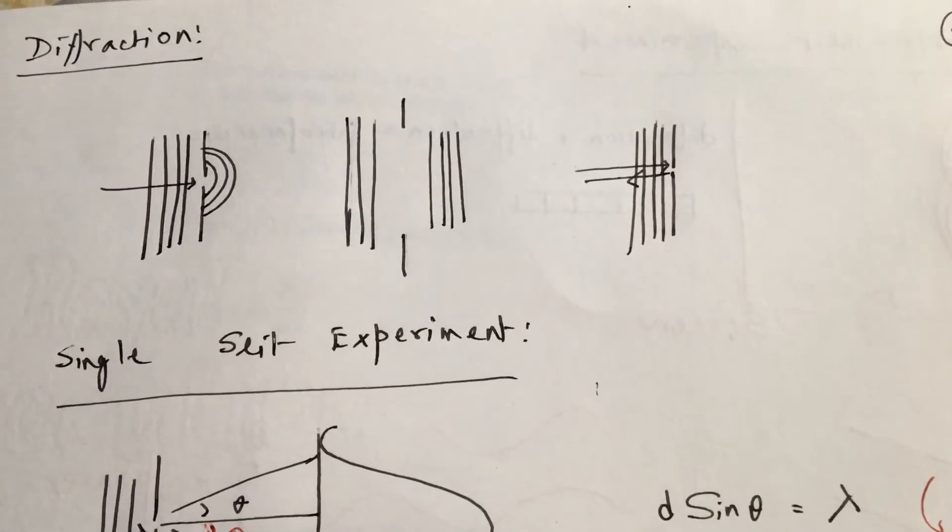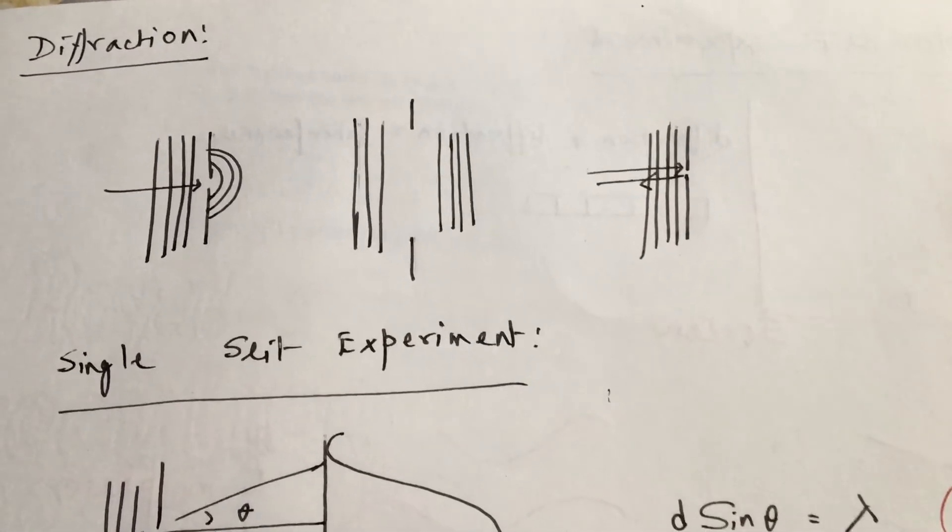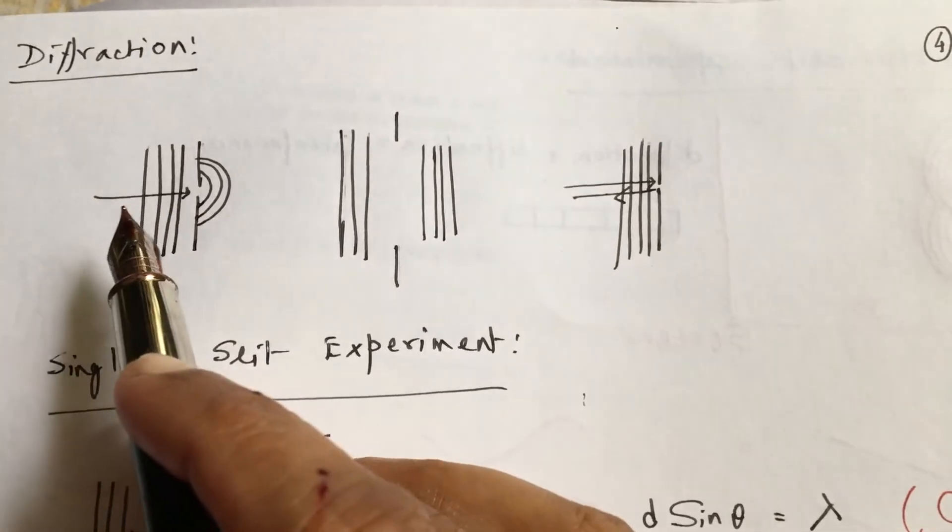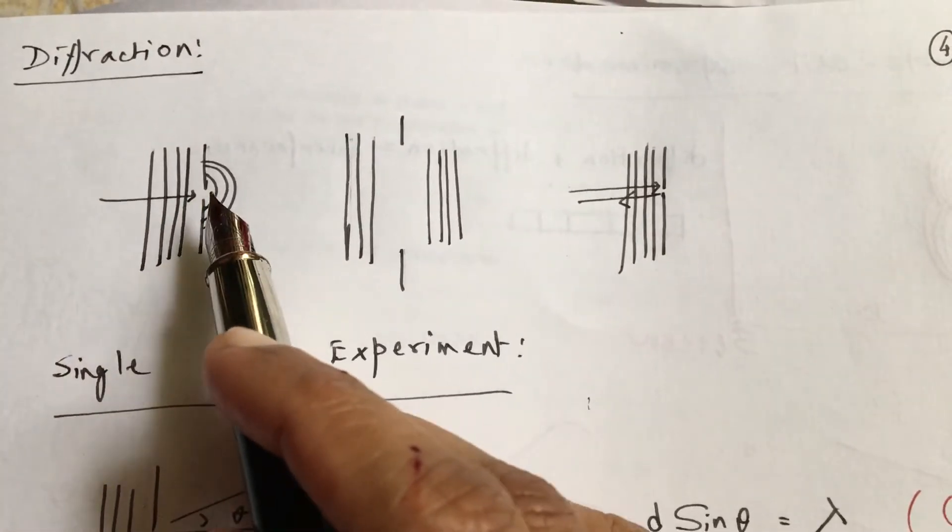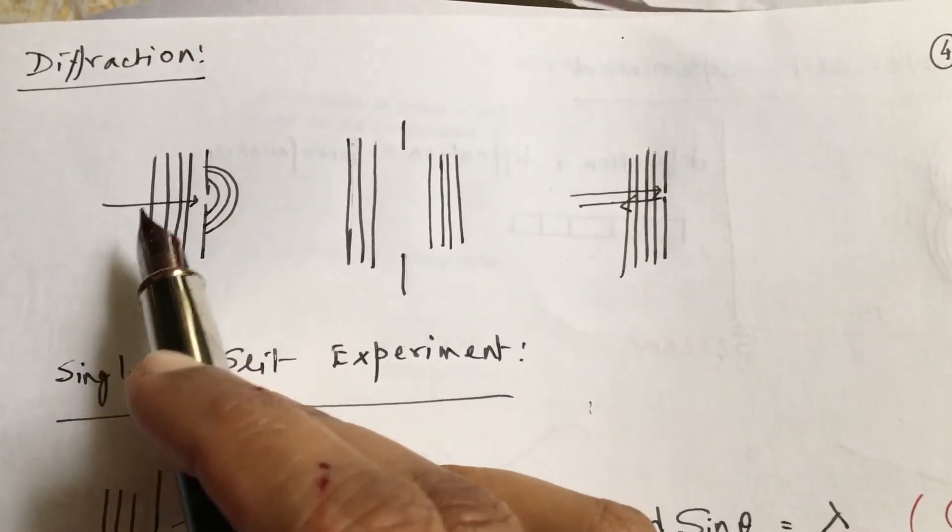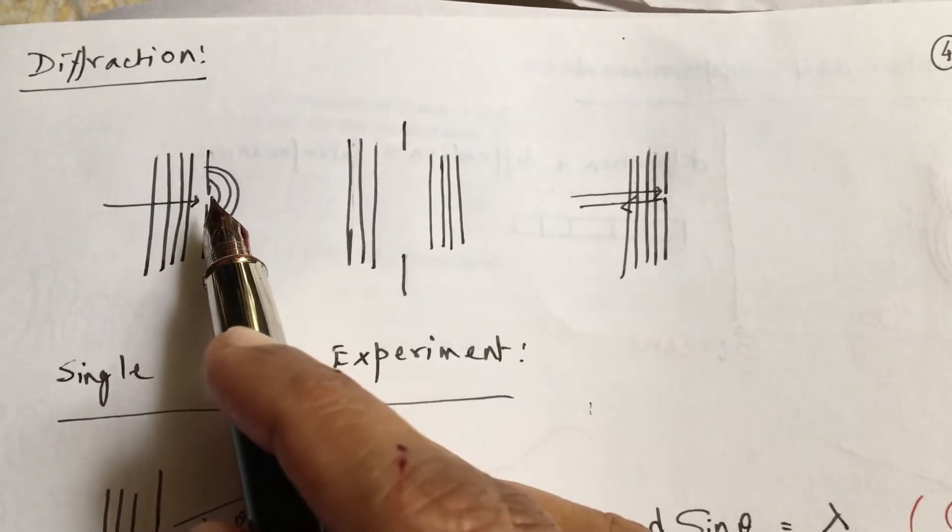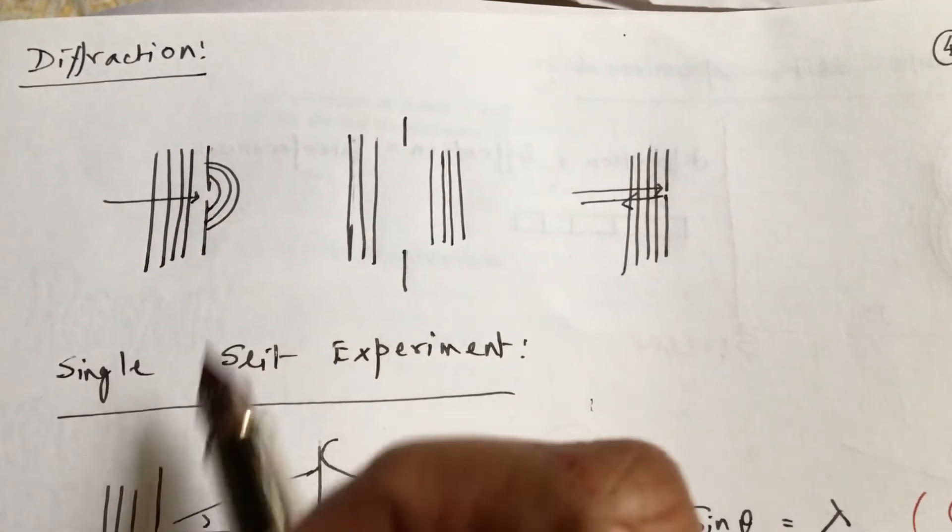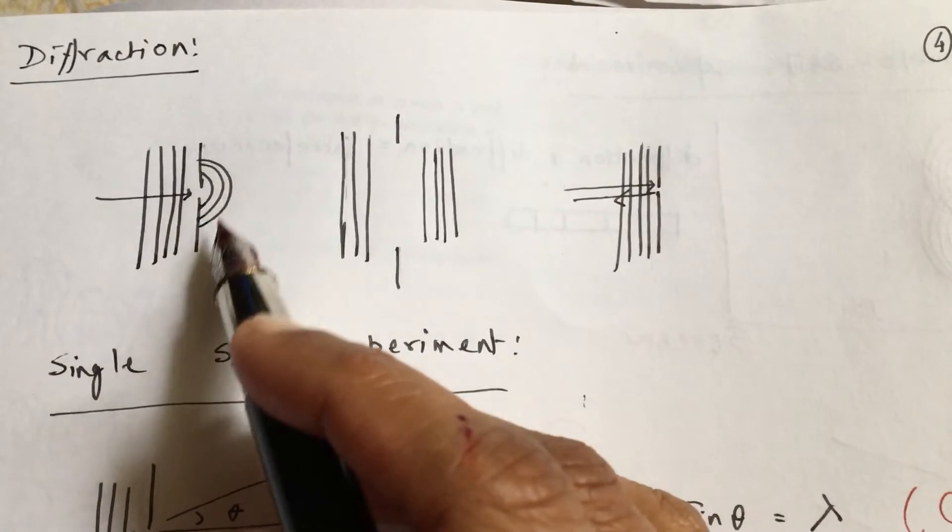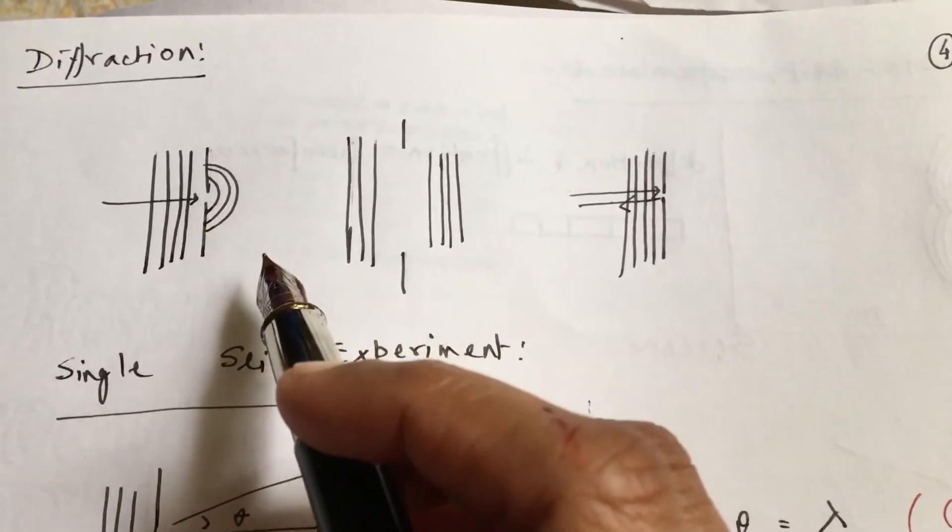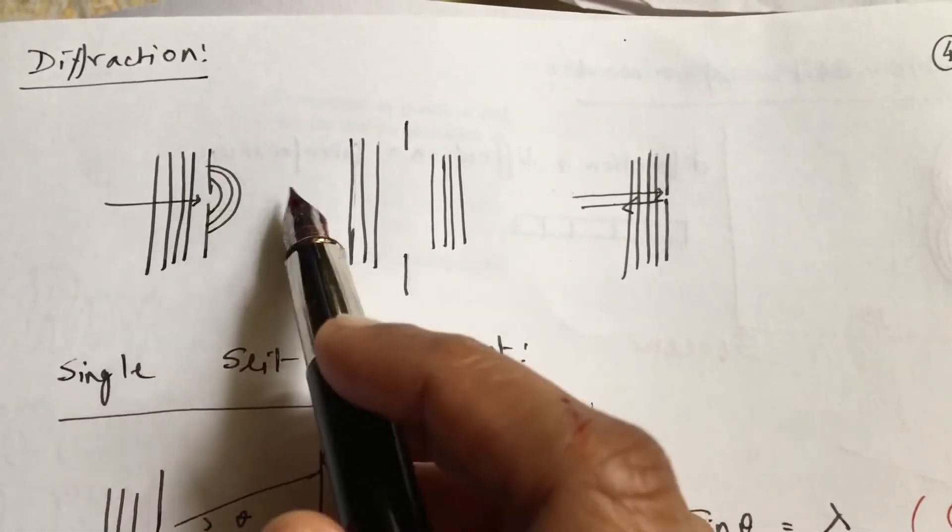Let's come to diffraction. Suppose the wave is coming from left hand side and it encounters a gap here. If the wavelength lambda and the width of this gap is compatible, then we get this kind of pattern - dark, light, dark, light - on the other side of this gap.